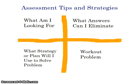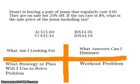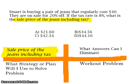Of course, we are going to look at tips and strategies we can use in order to shortcut to find the answer. Here are my four window panes: What am I looking for? What answers can I eliminate? What strategy or plan will I use in order to solve the problem? And also to work out the problem. What am I looking for? We know that we are looking for the sale price of the jeans, including tax.